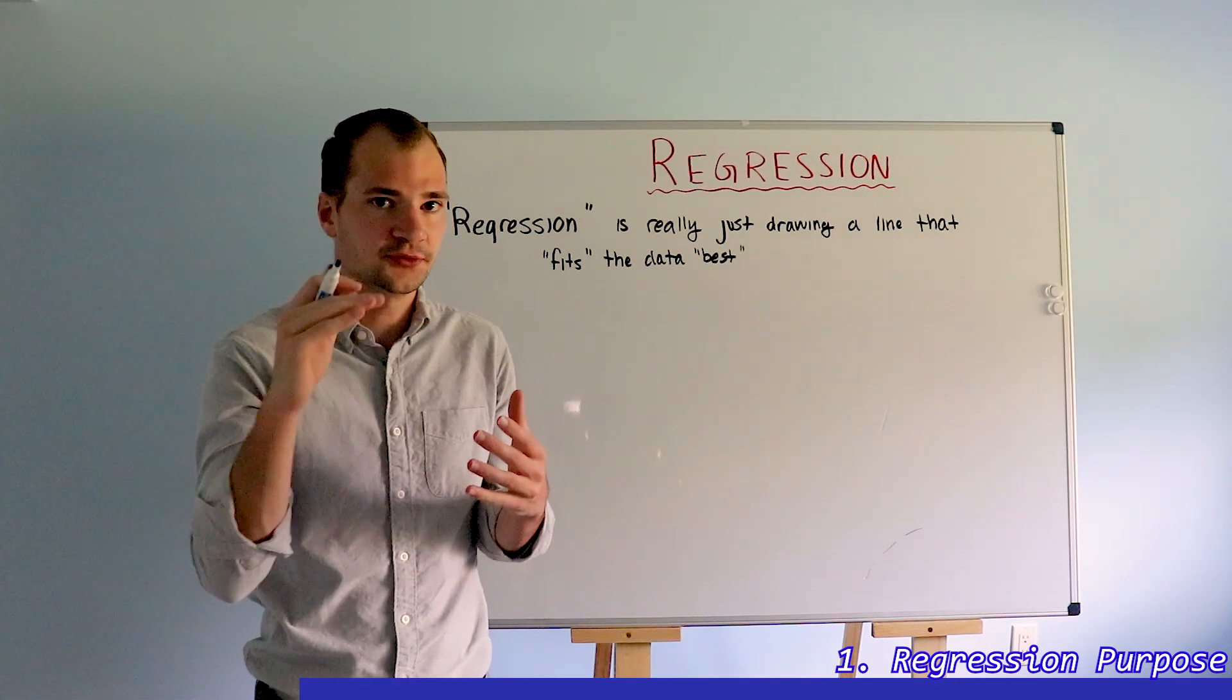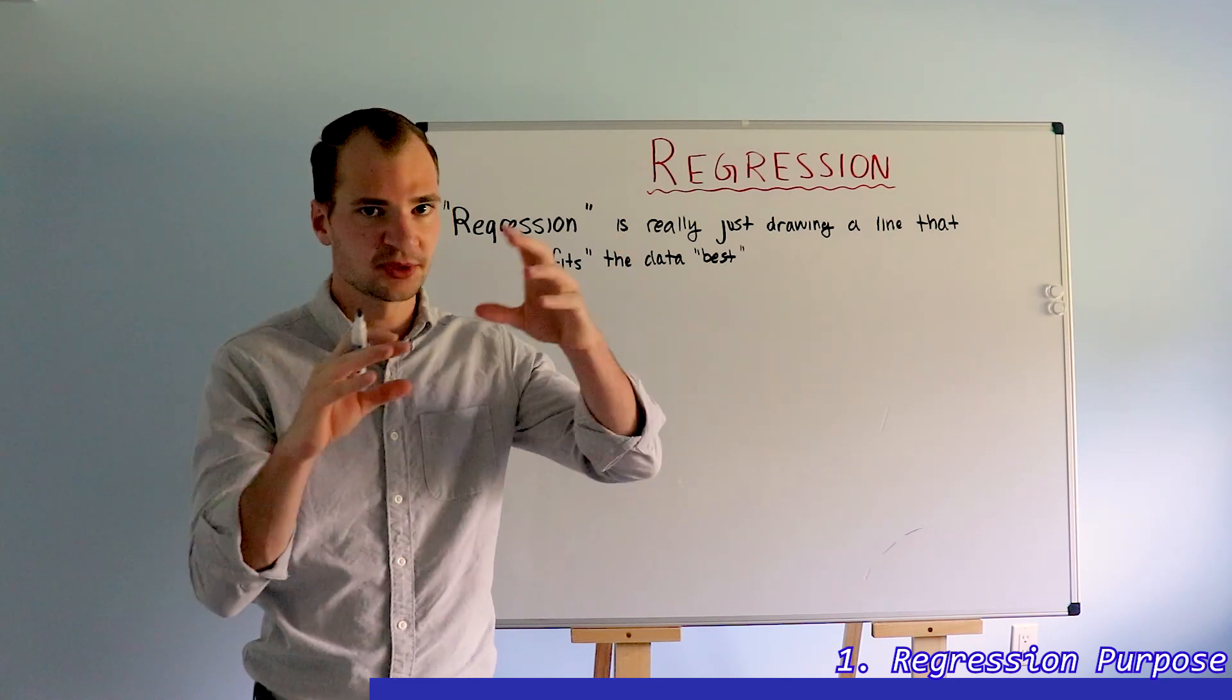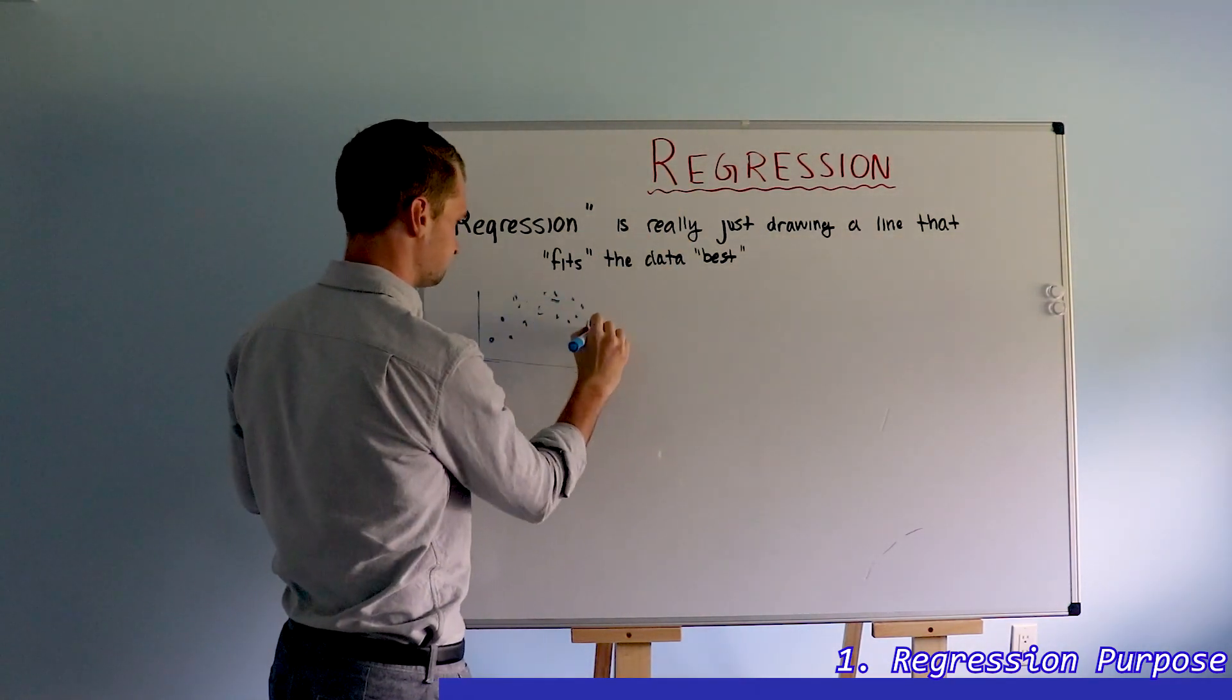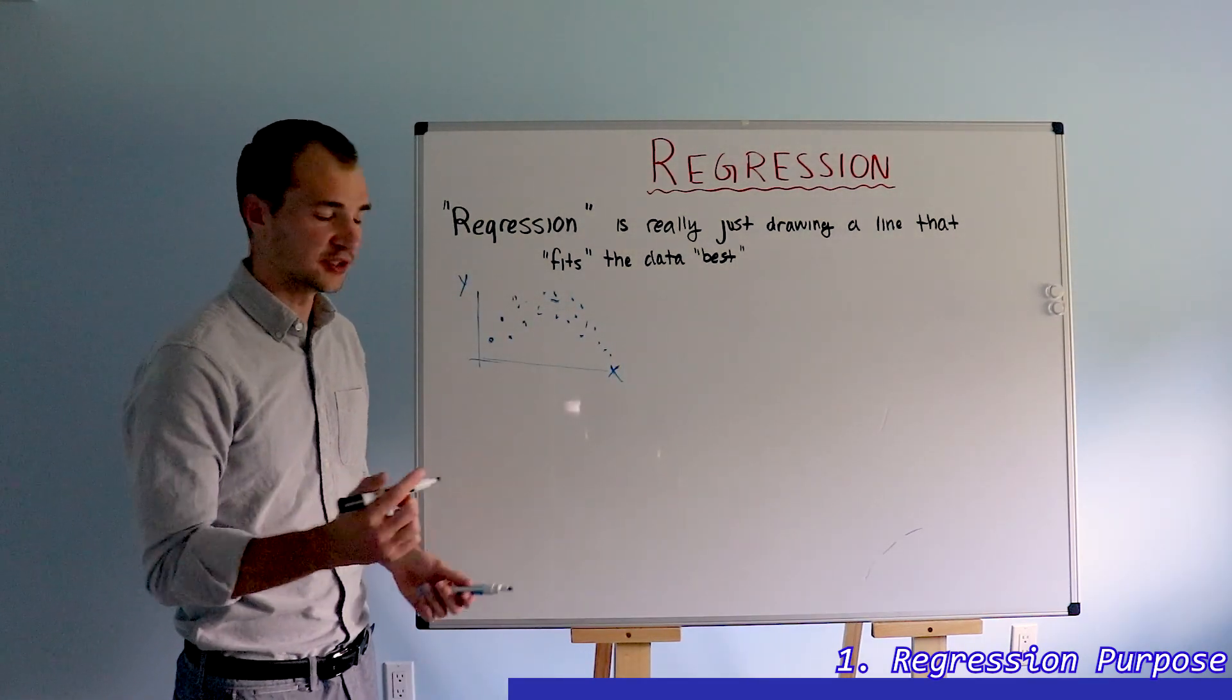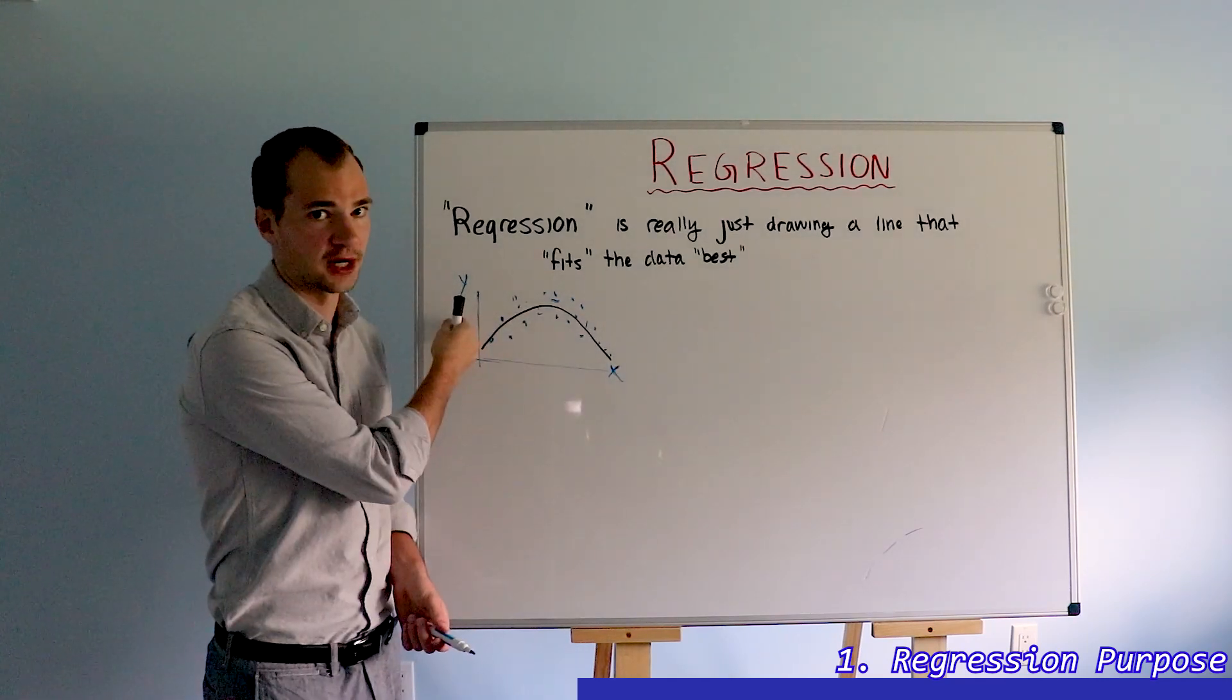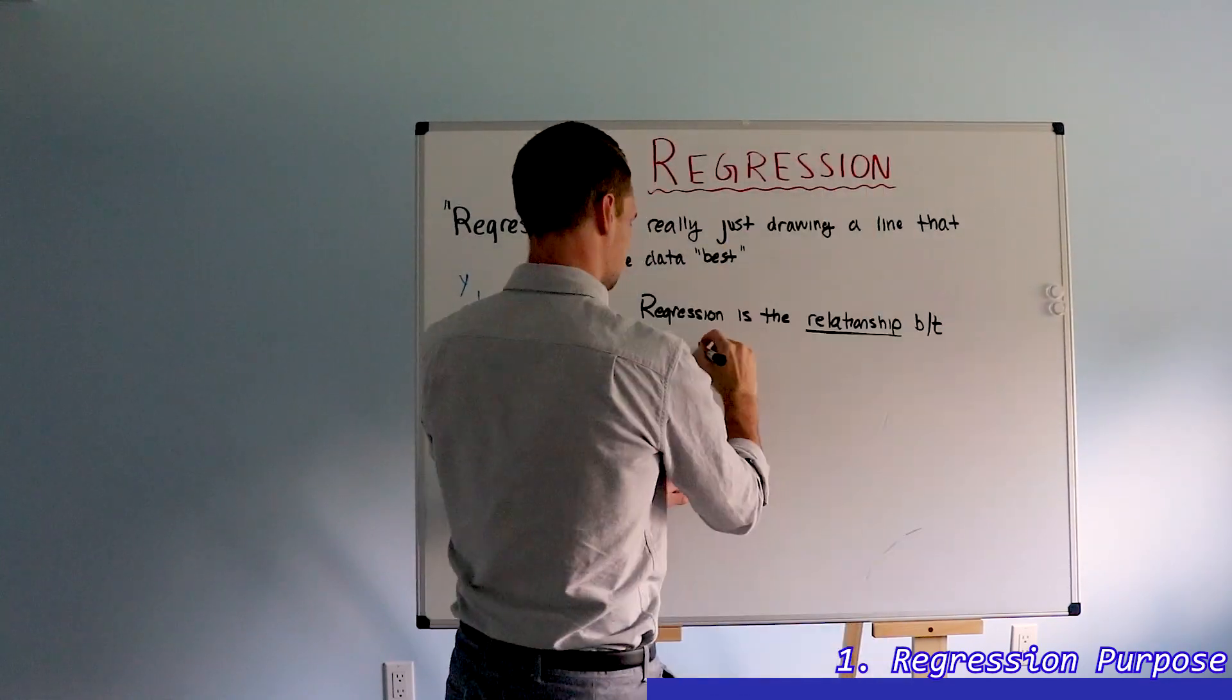A line that fits through data points is really just a summary of the relationship between the two inputs. If we have an input x and a result y, when we fit a best fit line, it just tells us the relationship between x and y. That is, if we plugged in this x, we'd expect this y out.